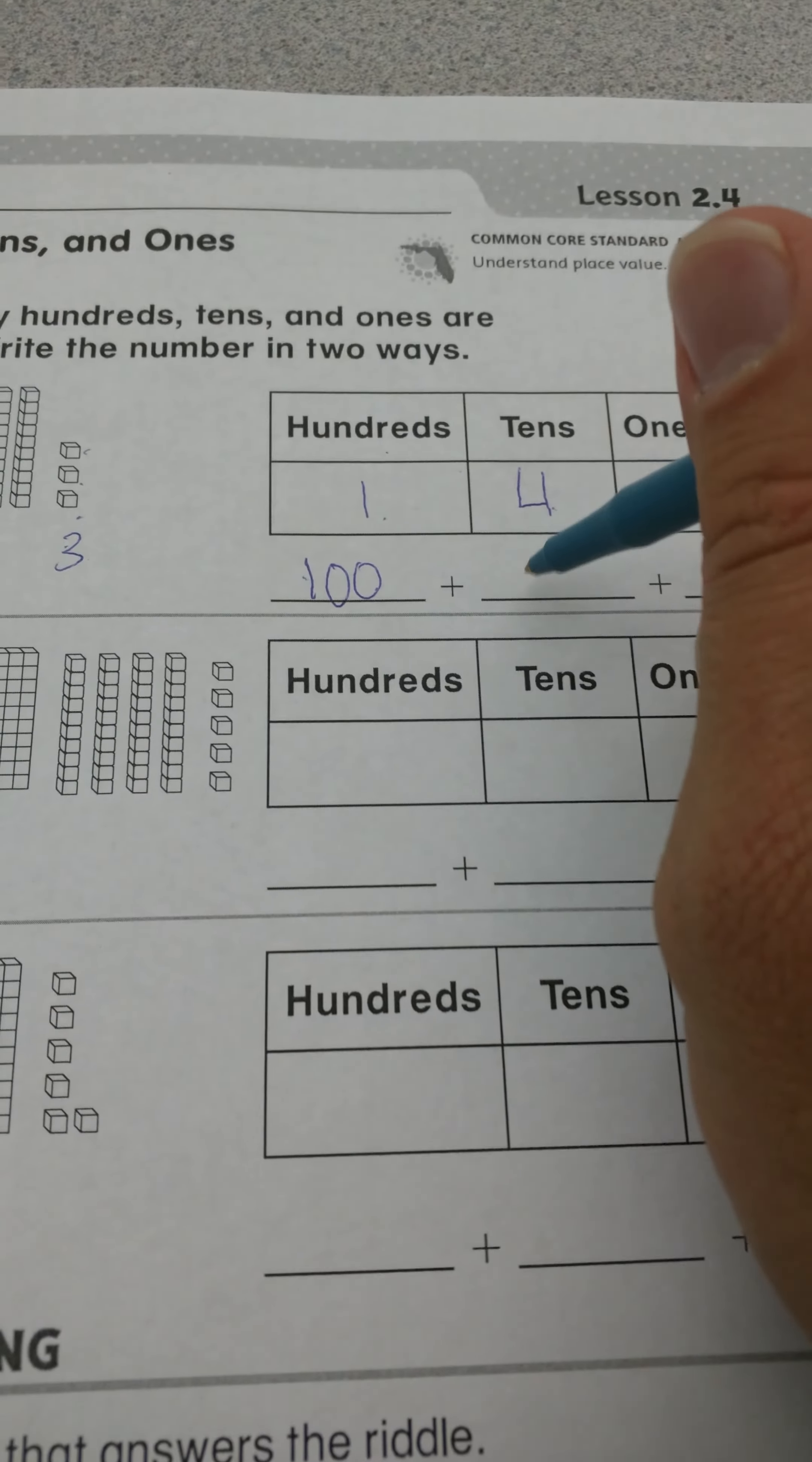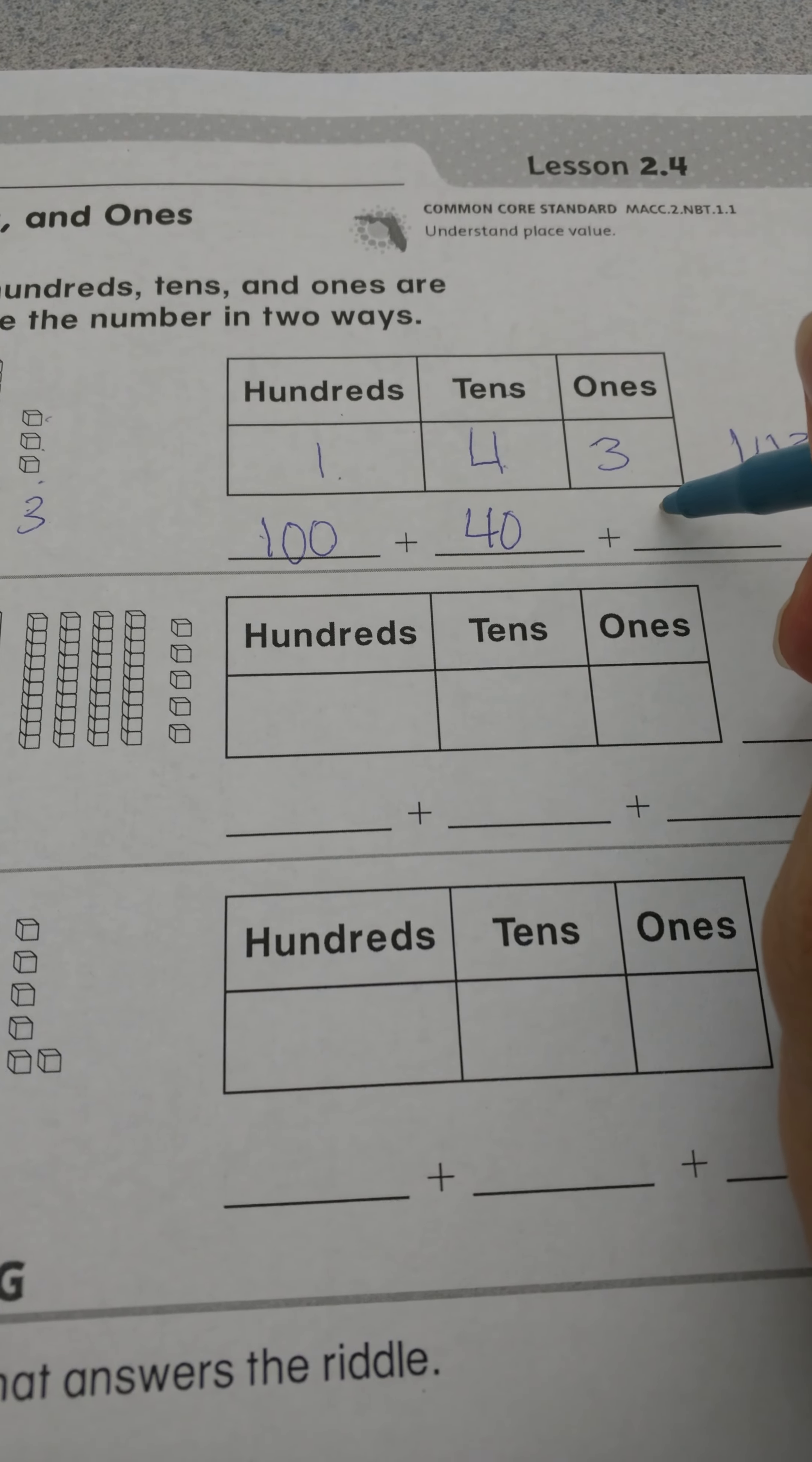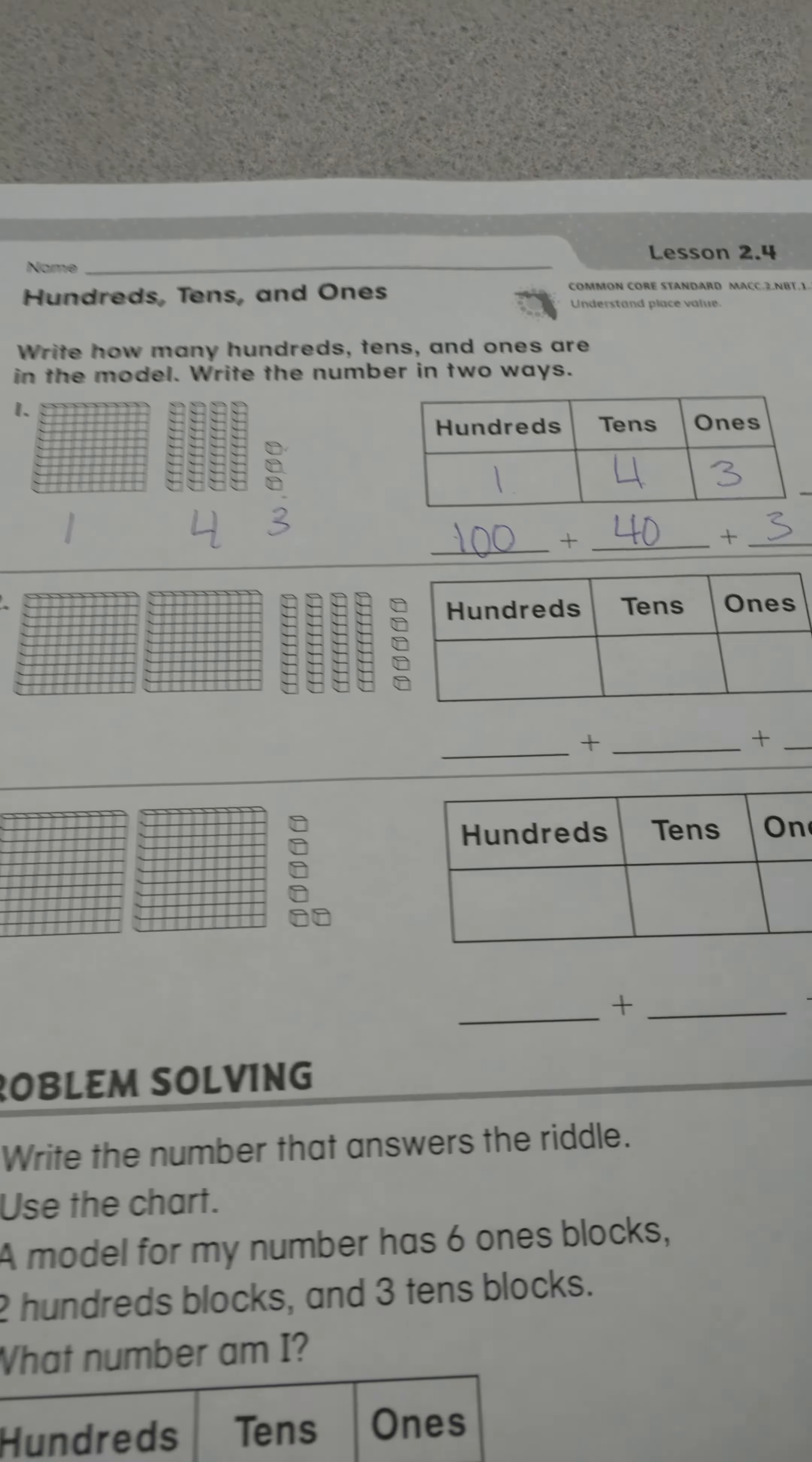I'm going to write 40 here, because four tens, if we put a zero behind where the tens is, that would make 40. And ones, we do not add any zeros. So it would be 100 plus 40 plus 3 makes 143. And that's pretty much it right there.